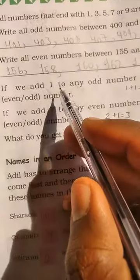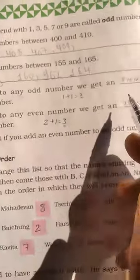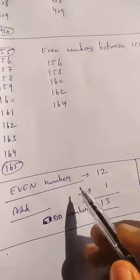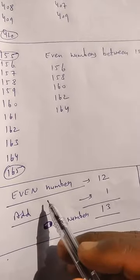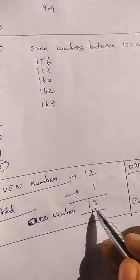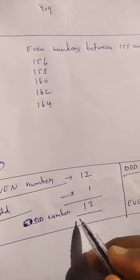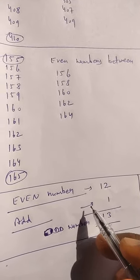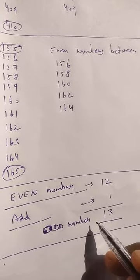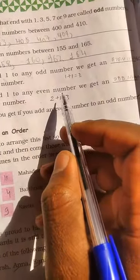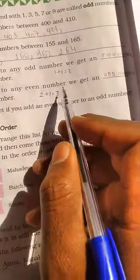इसी तरह दूसरा पूछा गया है: जब हम किसी even number में 1 plus करेंगे तो result क्या मिलेगा? Even number 12 लेते हैं, उसमें 1 add करते हैं — result मिला 13. 13 का end 3 से होता है, जो odd number है। So, when we add 1 to any even number, we get an odd number. The answer is odd number.